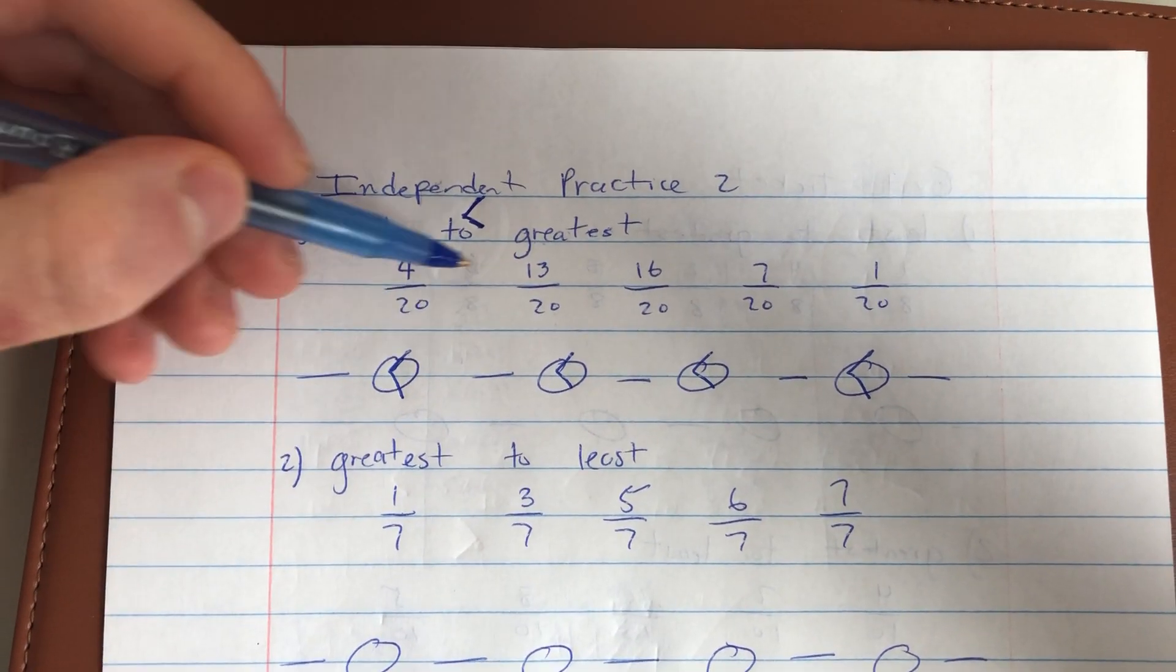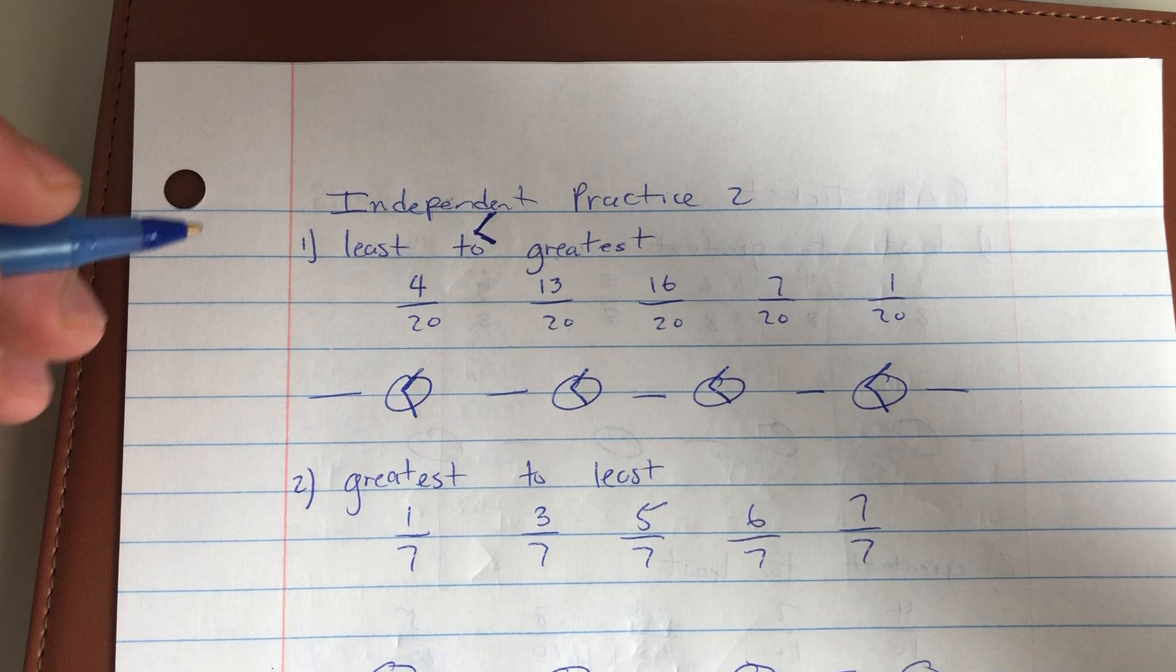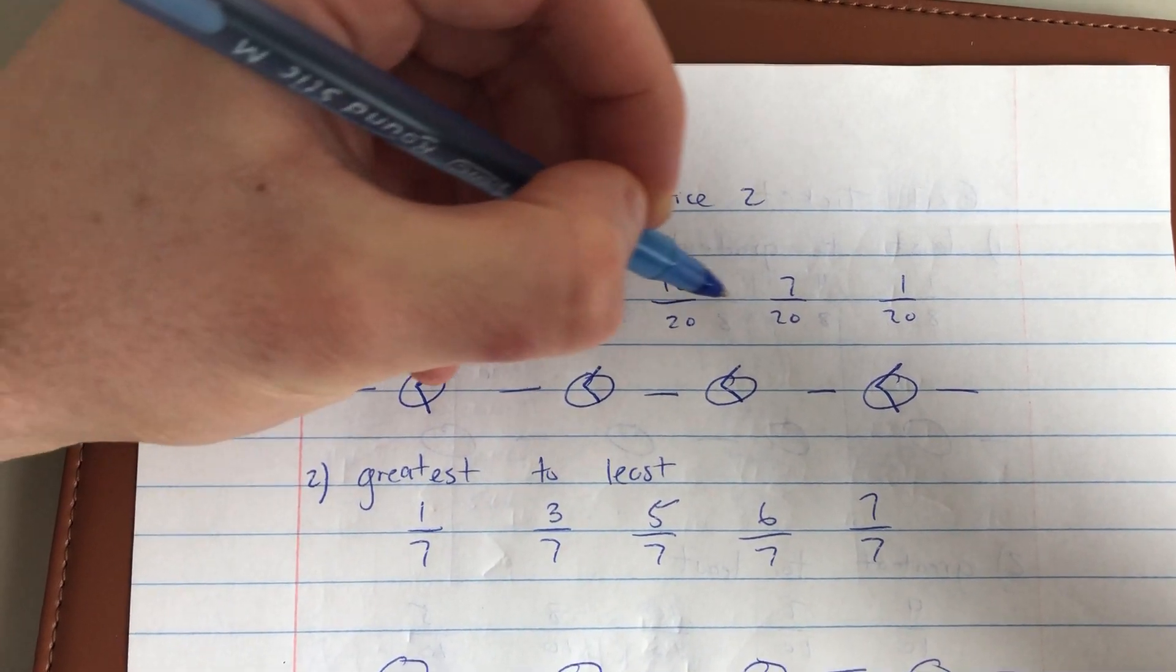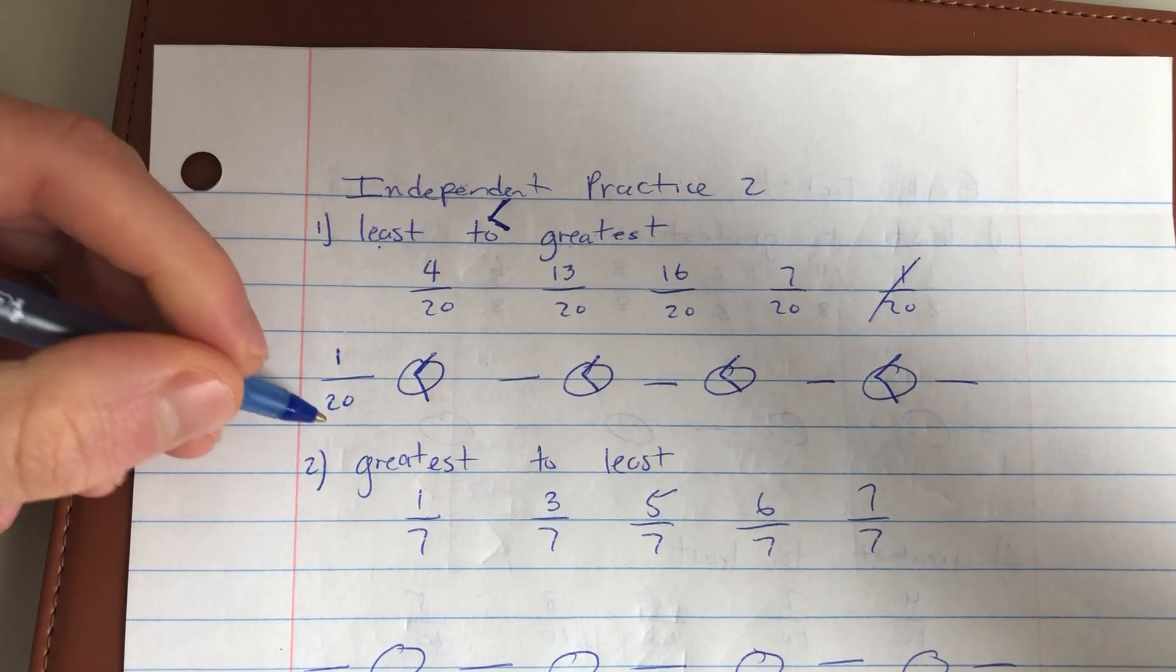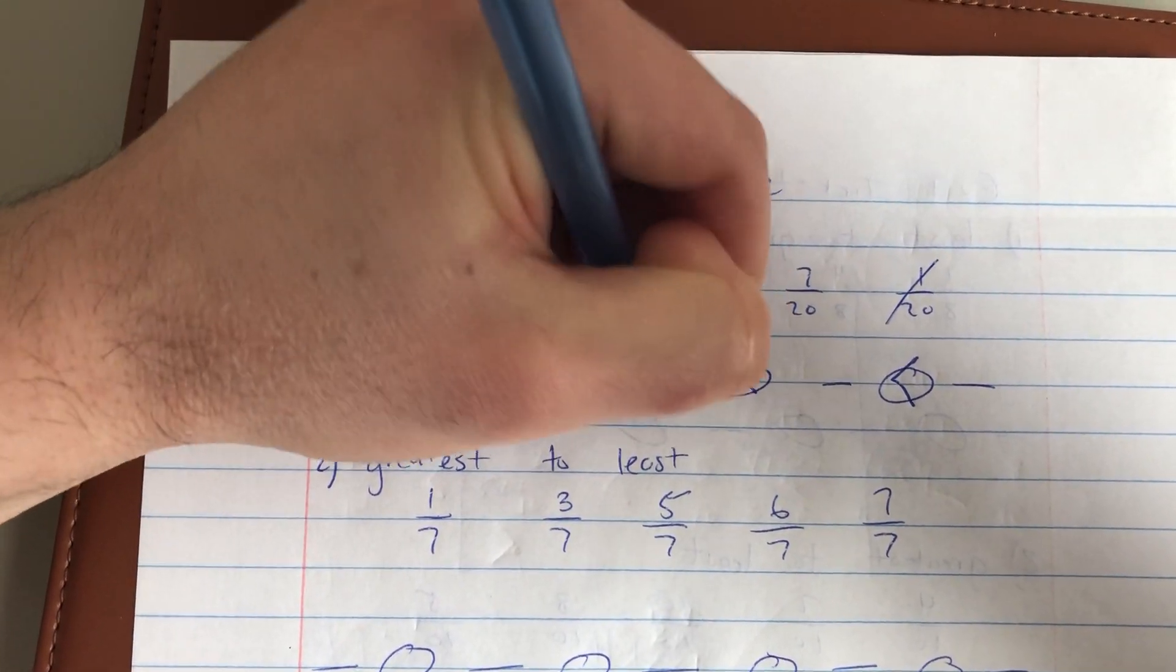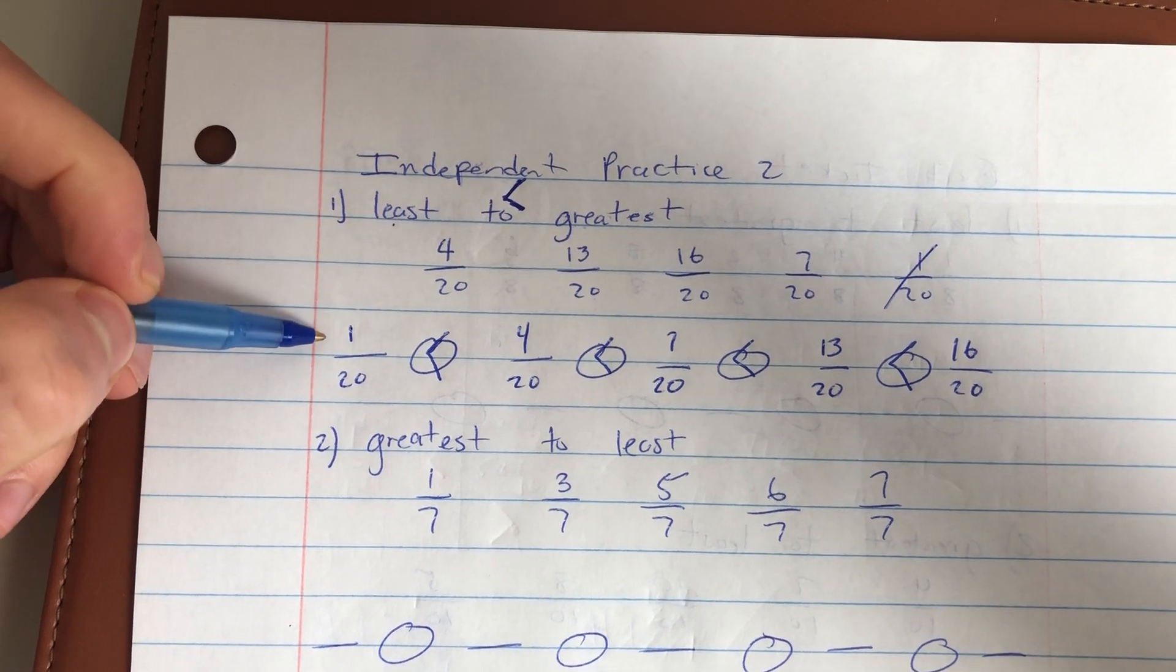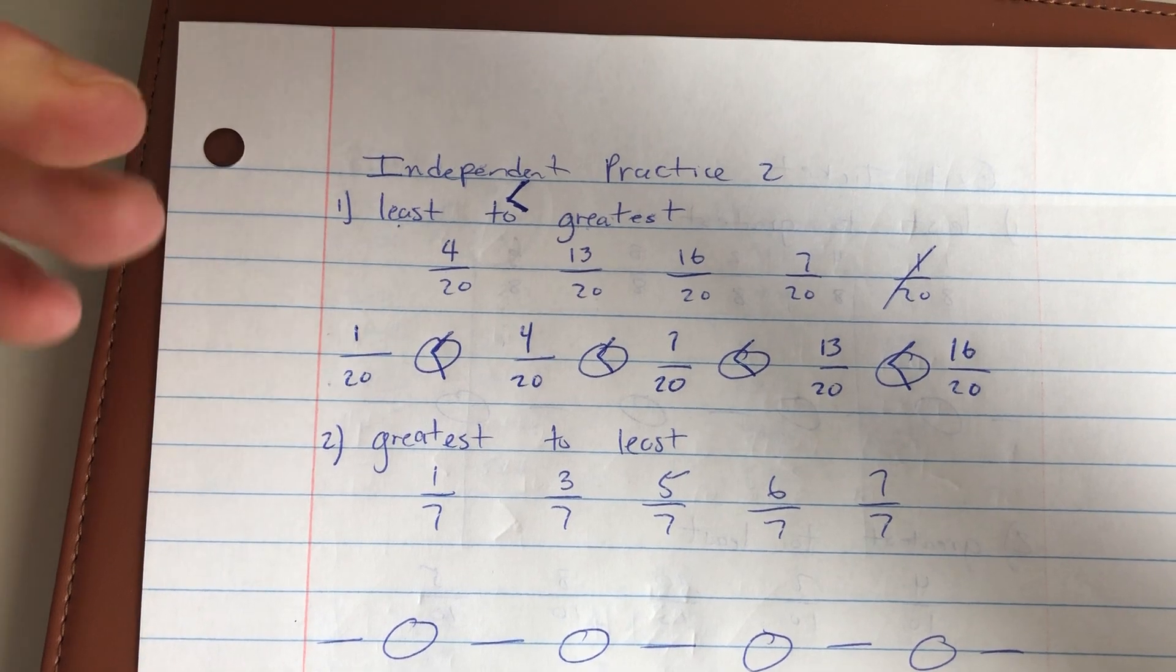When ordering these, the denominator is the same for each fraction - 20. So I already know the larger the numerator, the larger the fraction. But I want to start with the smallest fraction here, so I'm looking for the smallest numerator: 4, 13, 16, 7, 1. One is definitely my smallest numerator, so I start with 1/20. 1/20 is less than 4/20 is less than 7/20 is less than 13/20 is less than 16/20. Because I go from least to greatest and my denominators are all the same, I start with the smallest numerator and move through my ordering to the largest numerator.